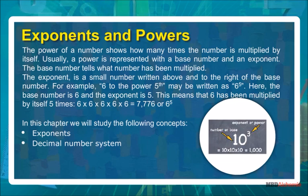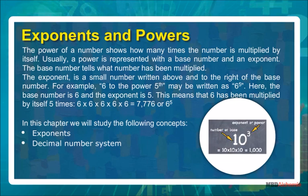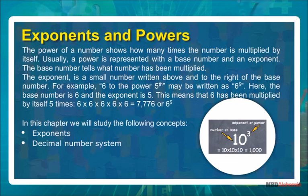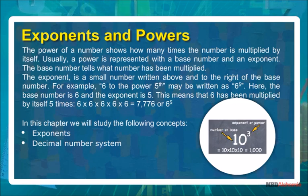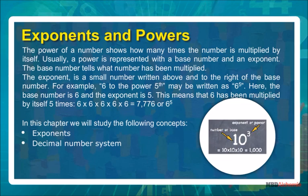This means that 6 has been multiplied by itself 5 times. 6 × 6 × 6 × 6 × 6 is equal to 7776, or 6 to the power 5.